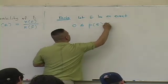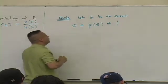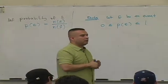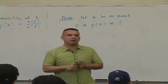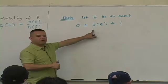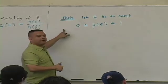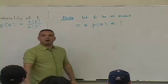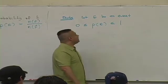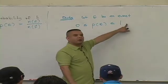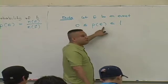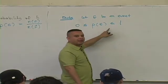Probability of an event is less than or equal to 1. What does that mean? That if you ever compute a probability that's negative, you are wrong. If you ever compute a probability that is greater than 1, you are wrong. Probabilities are always between 0 and 1, and that's inclusive.